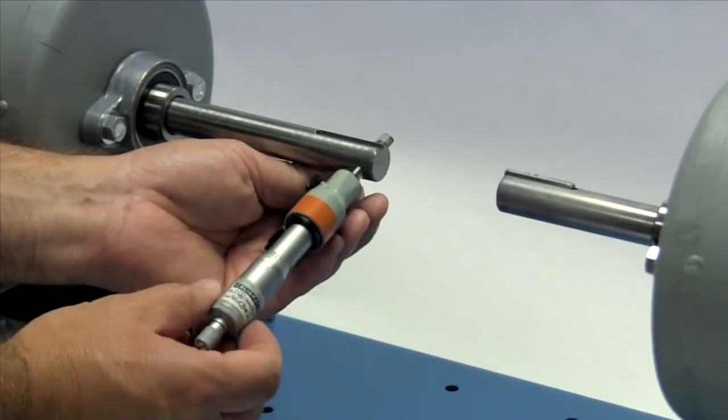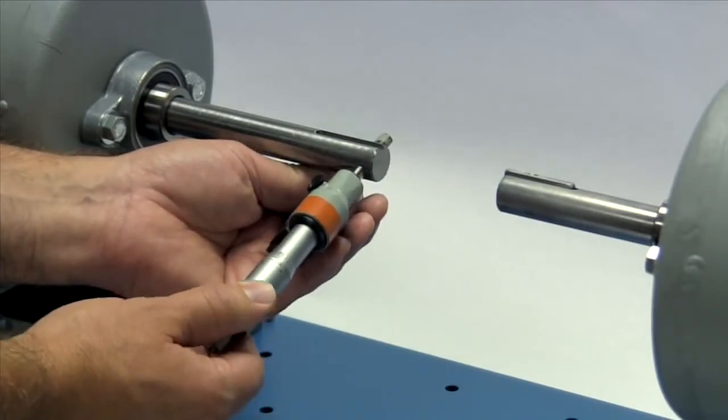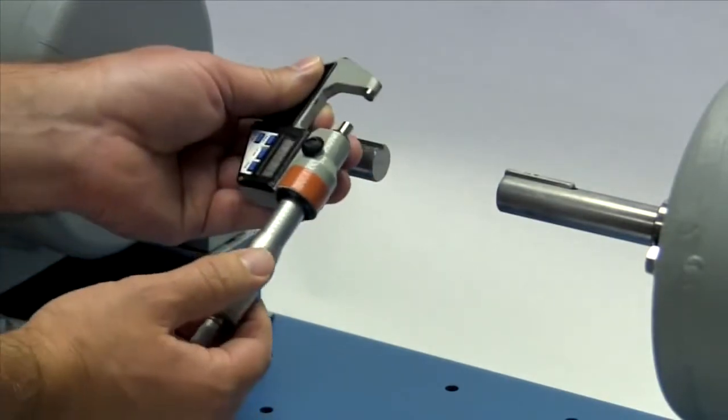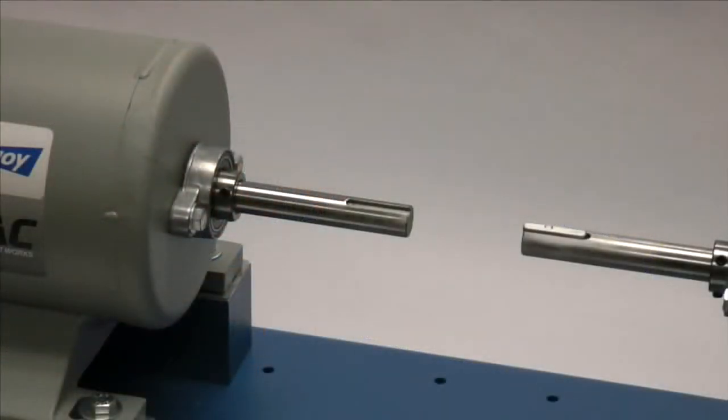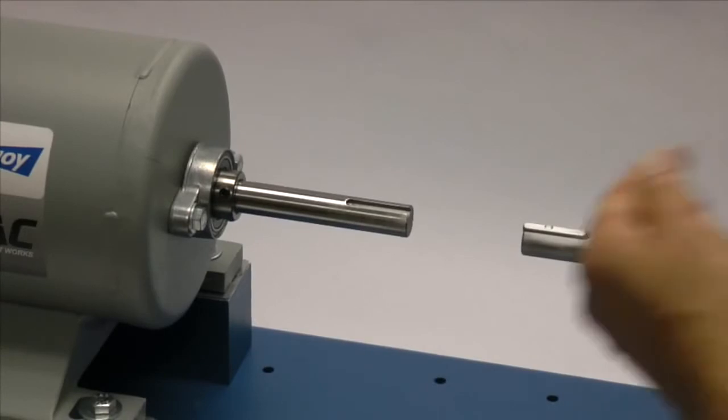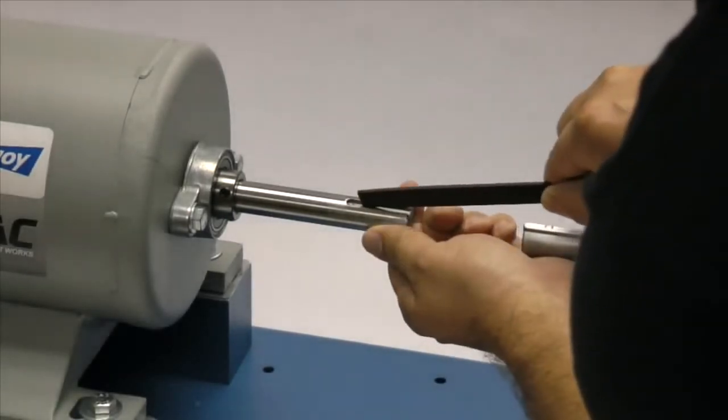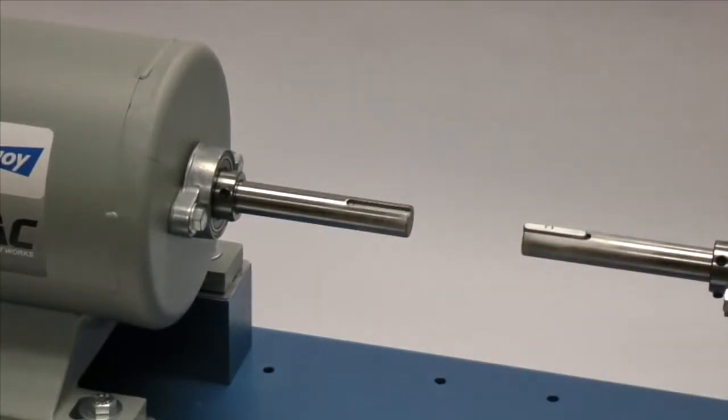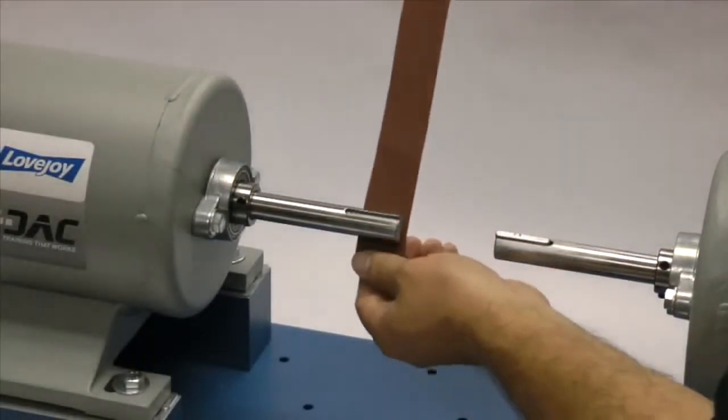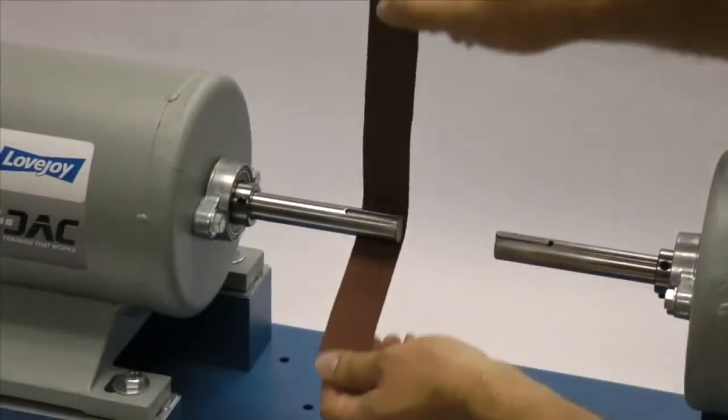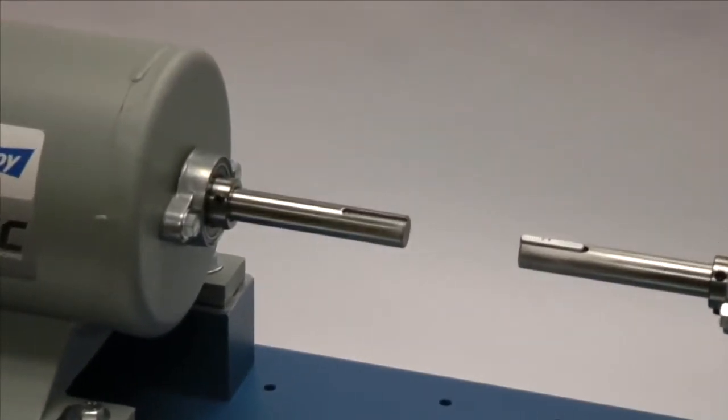If not done already, you should measure the shaft and ensure that the shaft diameter matches the coupling bore size. Then inspect the shaft and clean off any nicks or burrs from the keyway or shaft diameter. A fine tooth file can be used to clean burrs from the edge of the keyway or large dents in the shaft. The emery paper can be used to clear the shaft of rust or any fretting corrosion.